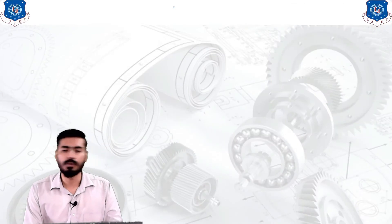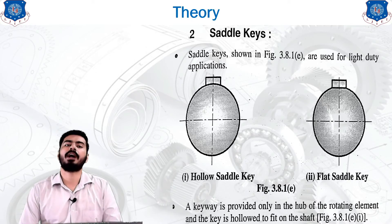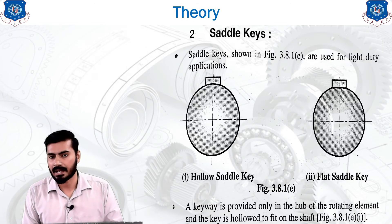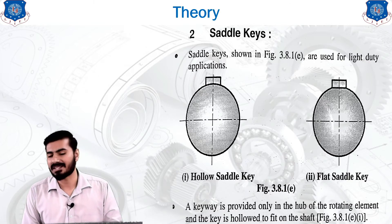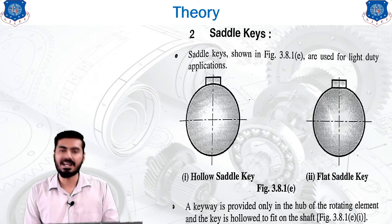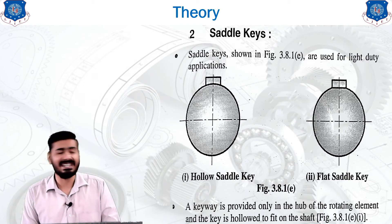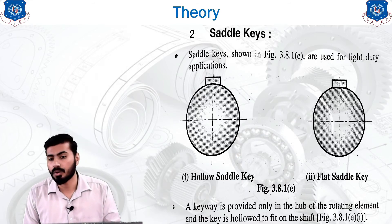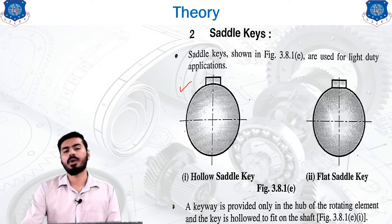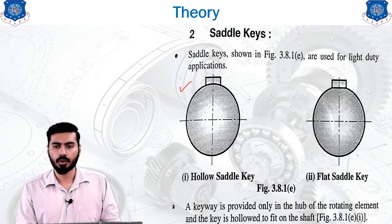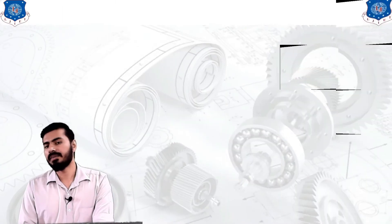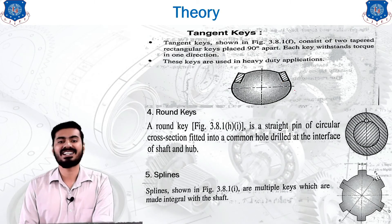Apart from the sunk key, the next type is the saddle key. There are two types: the hollow saddle key and the flat saddle key. Both saddle keys are generally applied in light duty applications. A keyway is provided only in the hub; the hollow saddle key is hollowed to fit on the shaft's diameter, while the flat saddle key has a flat surface to accommodate the key.